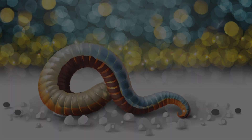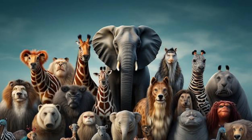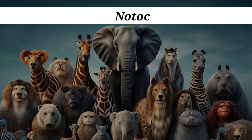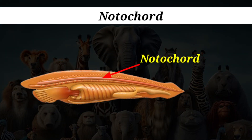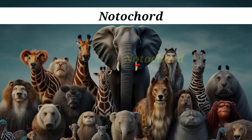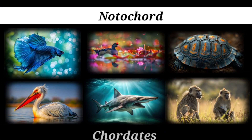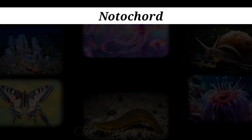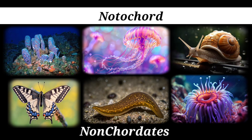One of the most important features for animal classification is the presence or absence of a notochord. Some animals develop a rod-like structure on the dorsal side during embryonic development, which is known as the notochord. Animals with a notochord are called chordates, while animals without a notochord are called non-chordates. Members of phylum Porifera to echinoderms are non-chordates.